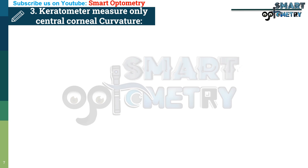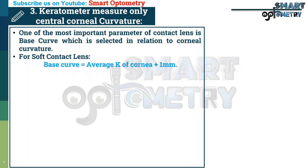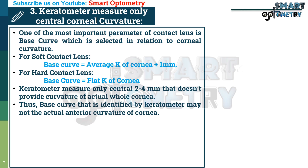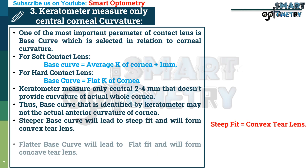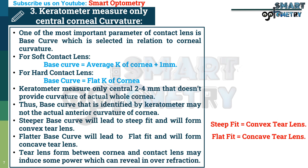The third reason is that the keratometer measures only central corneal curvature. One of the most important parameters of contact lens is base curve, which is selected in relation to corneal curvature. For soft contact lens, base curve equals average K of the cornea plus 1 mm. For hard contact lens, base curve equals flat K of the cornea. The keratometer measures only the central 2 to 4 mm and does not provide curvature of the whole cornea. A steeper base curve leads to steep fit and forms a convex tear lens, while a flatter base curve leads to flat fit and forms a concave tear lens. The tear lens formed between cornea and contact lens may induce some power which can be revealed in over-refraction.